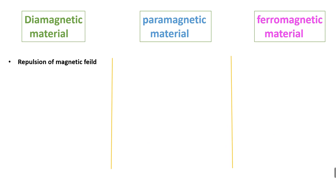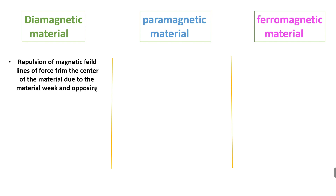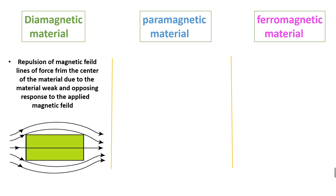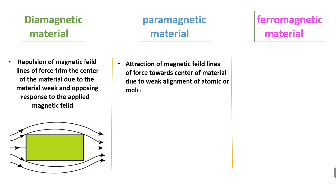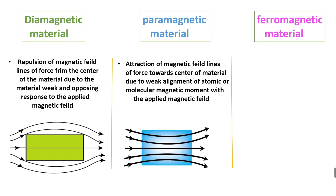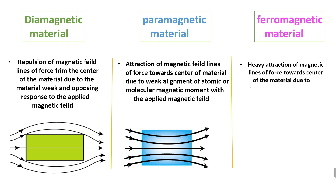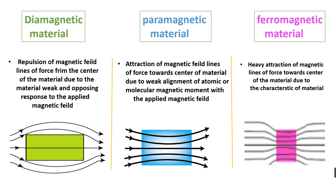Diamagnetic material shows repulsion of magnetic field lines of force from the center of the material, due to the material's weak and opposing response to the applied magnetic field. It repels magnetic field lines towards the center. While paramagnetic material shows attraction of magnetic field lines of force towards the center of the material. It shows heavy attraction.